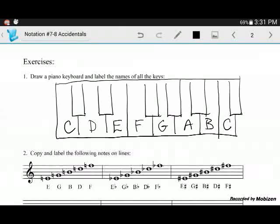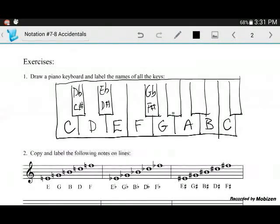Now we're going to label all the black keys, and remember what they are called. This one is called C sharp, or D flat. This one is D sharp, or E flat. This one is F sharp, or G flat. G sharp, and A flat. And this one is A sharp, or B flat.